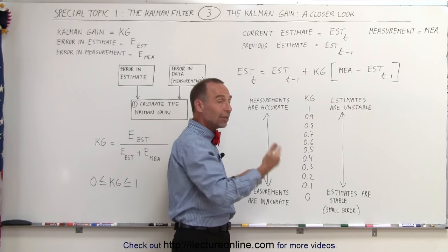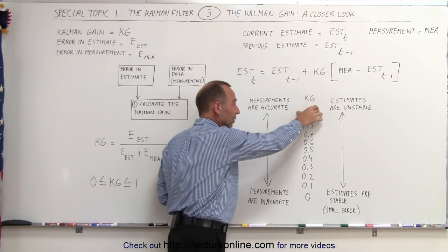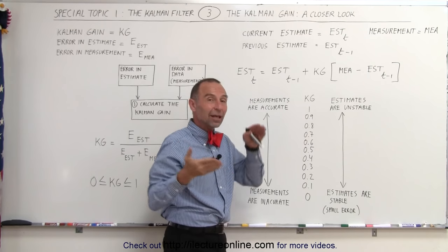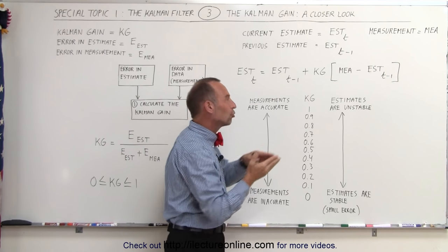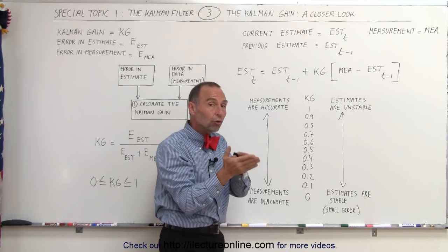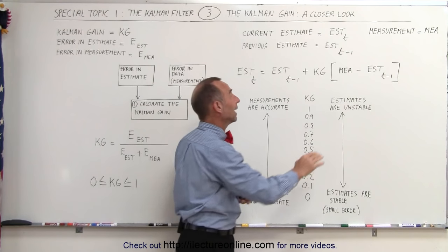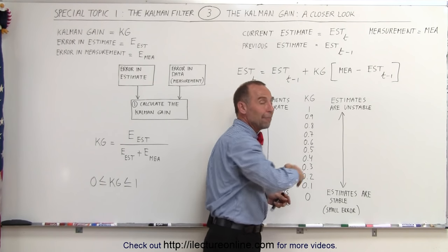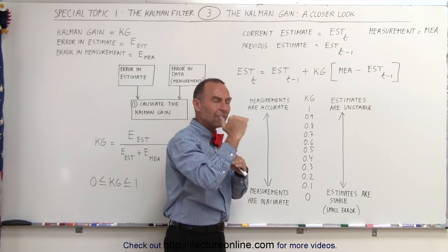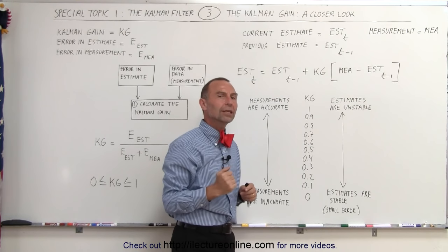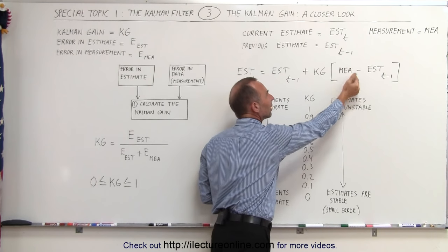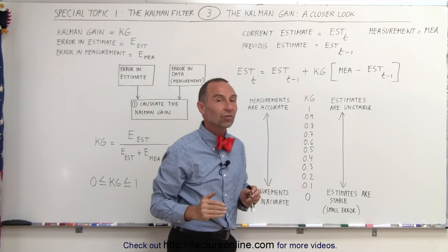Over time, typically the size of the Kalman gain will get smaller and smaller, which means we're getting closer and closer to the true value. The estimates are becoming closer to the true value, and we don't want to be upset by measured values which could be very erratic and have large uncertainty, so we just take small portions of the delta to update the estimates.